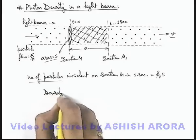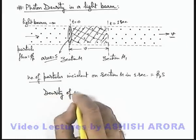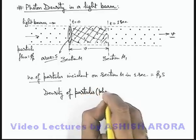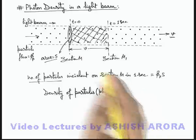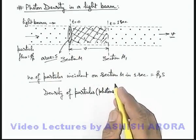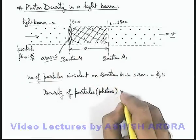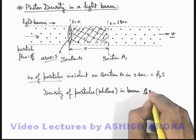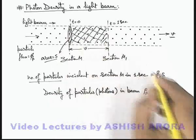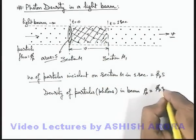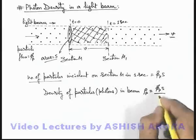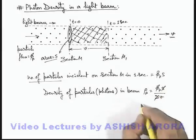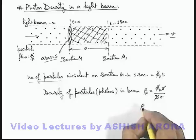particles—and you must be careful here, we are talking about photons, and the same analysis is valid even if there is a stream of particles. So density of particles or photons in beam can be directly given here as rho p, which is equal to the total particles in this volume is phi p S, divided by the total volume of this region, that is S multiplied by v. Here S gets cancelled out. And you can see the density rho p can be written as phi p by v.